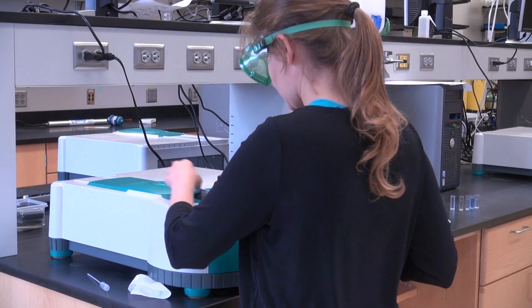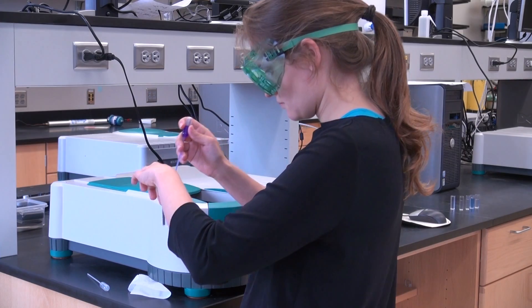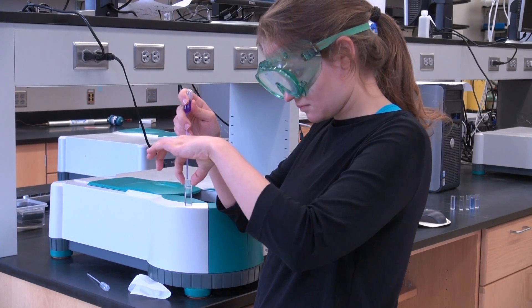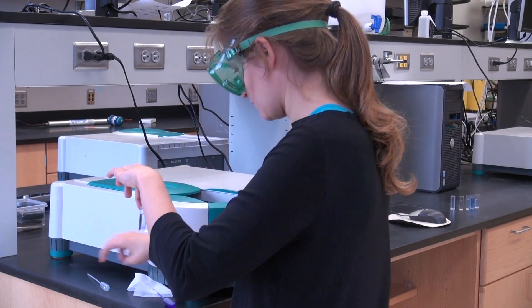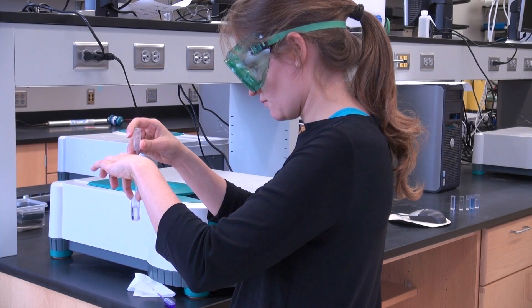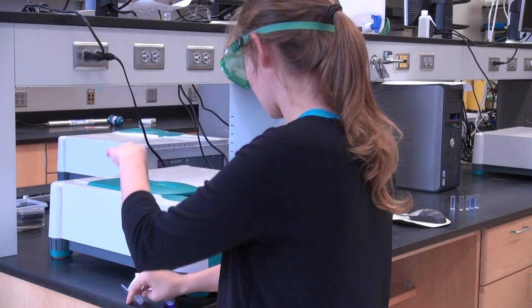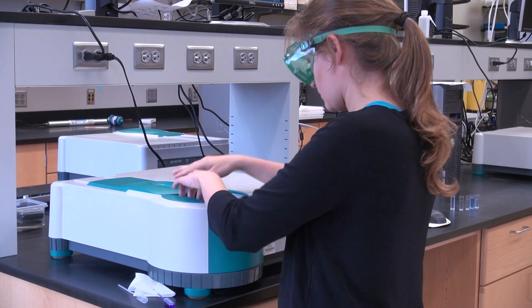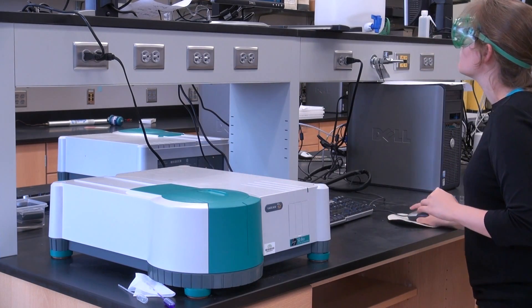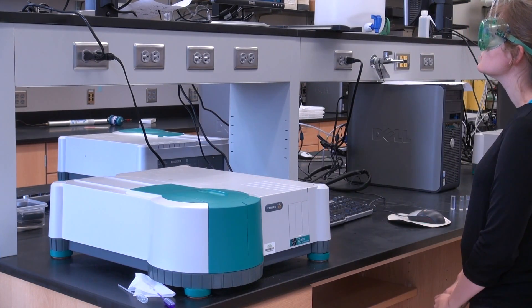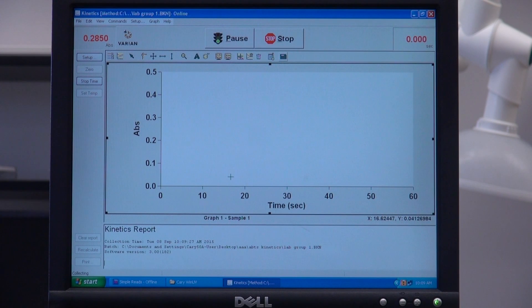Quickly take the cuvette out of the spectrophotometer, add one drop of crystal violet to the sodium hydroxide in the cuvette, use your other pipette to suck up the contents of the cuvette, then squeeze everything back into the cuvette. This mixes the solutions. Put the cuvette back in the spectrophotometer. Close the cover and immediately hit OK on the computer to start collecting data.